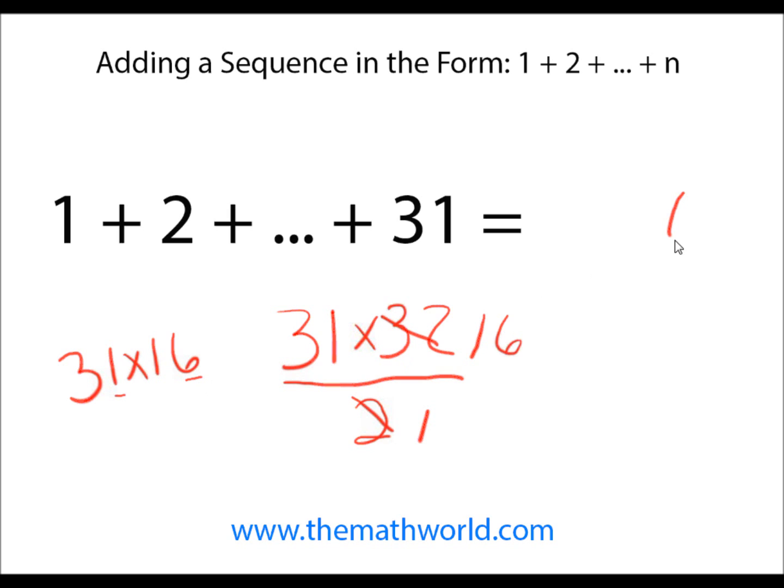I like to do the 1s digit times each other which is 6, and then 1 times 1 plus 3 times 6 gives us 19. We'll do a 9, carry our 1, 3 times 1 is 3 plus our 1 remainder is 4. So 1 added up all the numbers to 31 is 496.